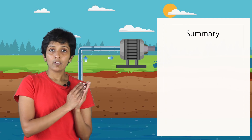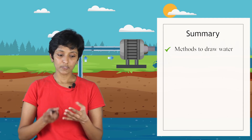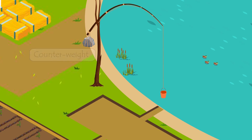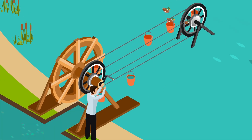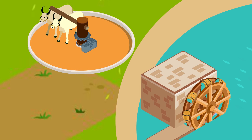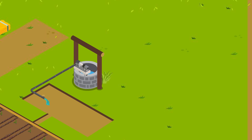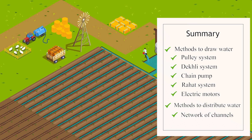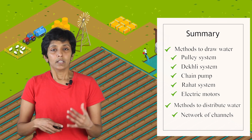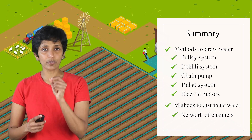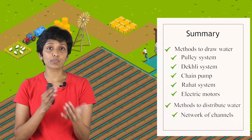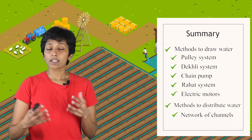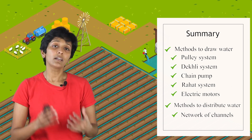Let's do a quick summary of the different methods we have seen. We looked at the pulley system, then the Dekli, then the chain pump, the Rahat system where we used bulls, and finally electric motors. In all these cases, once the water was drawn, it was dumped into a network of channels that distributed the water evenly to all the plants in the farm. In the next video, let's do a deeper dive into the step where we distribute the water, and look at a few more methods that can do this more efficiently than a network of channels.